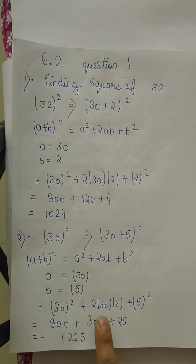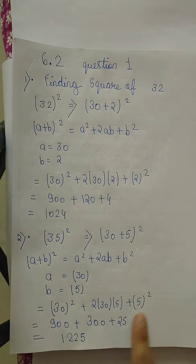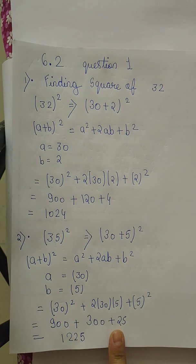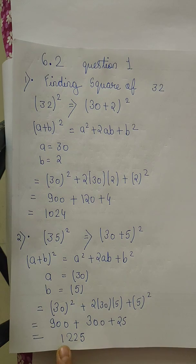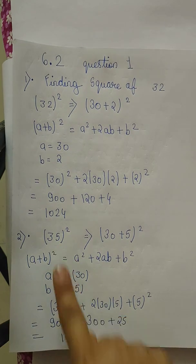30² + 2(30)(5) + 5². 30 ka square is 900, 2 into 30 into 5 is 300, and 5² is 25. If you've learned squares up to 25, your answers will come very quickly. So adding these three, we get 1225, which is 35 ka square.